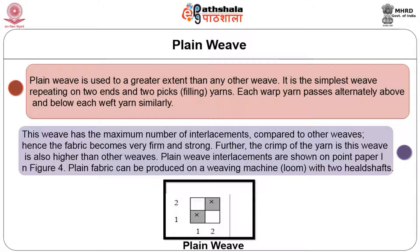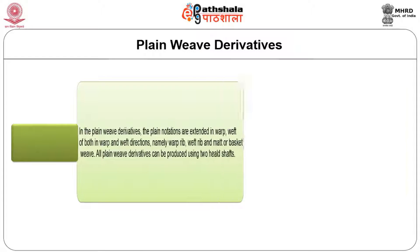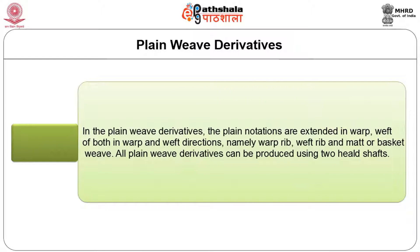Plain weave can be produced on a loom with two heel shafts. Plain weave derivatives: in a plain weave derivative, the plain notations are extended in the warp or weft direction, or both, namely warp rib, weft rib, or mat or basket weave. All plain derivatives can be produced using two heel shafts.